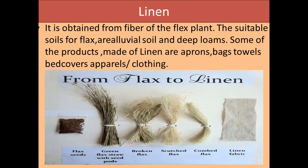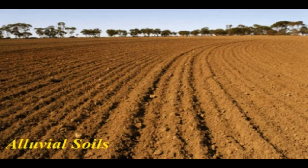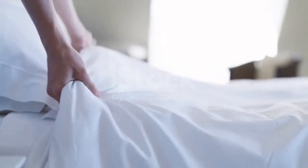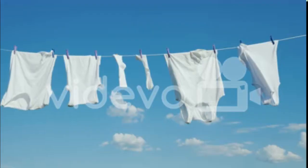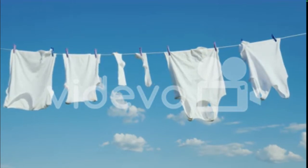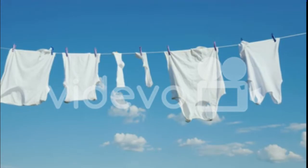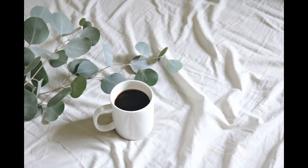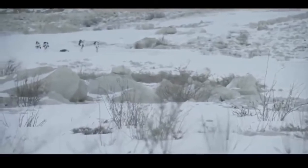The next fiber is linen. Linen is a very soft fabric obtained from the fiber of the flax plant. Suitable soils for flax are alluvial soil and deep loam. Products made of linen include aprons, bags, towels, and bed covers. Linen is known for its high lustre and good moisture absorption, which makes it considered even better than cotton fabric. It has a special role in women's clothing and designers create many designs from this fabric. It is also a very cool fabric for summers.